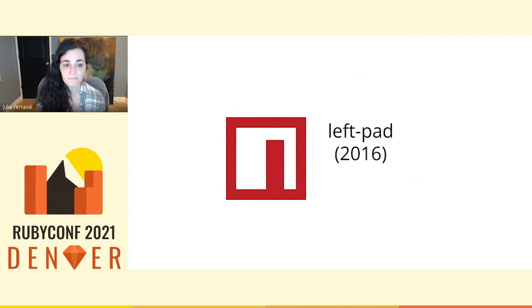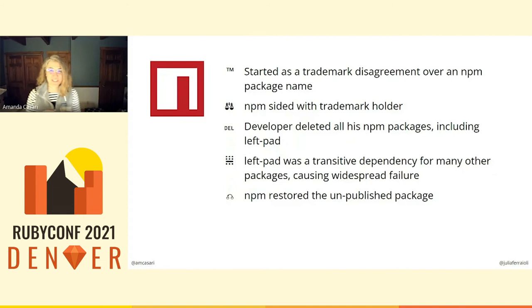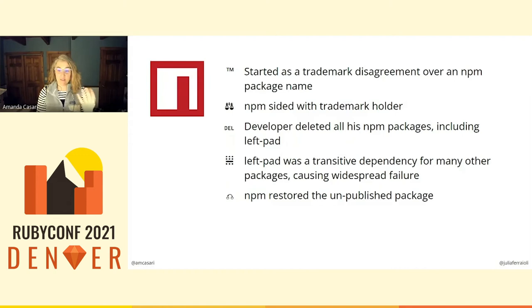Finally, we'd like to highlight the impact from an event in 2016, which continues to be discussed and felt by folks working in open source package management: LeftPad. The quick story of LeftPad was that everything started as a trademark disagreement over an npm package name — importantly, not the package named LeftPad, but a completely different package. Some maintainers maintain many packages, not just one. When the developer lost the dispute over the trademark agreement because npm ultimately sided with the trademark holder, the developer decided to delete all of his npm packages, including LeftPad. It is worth pointing out that this was within the developer's right — removing things from a larger system is within the rights of the creator.